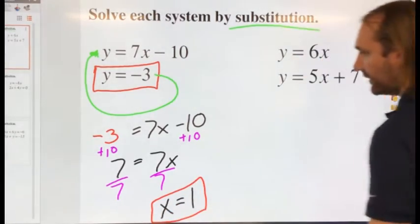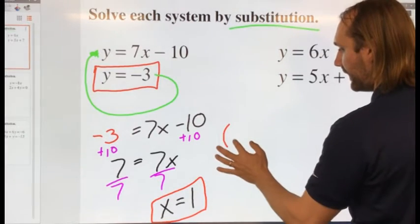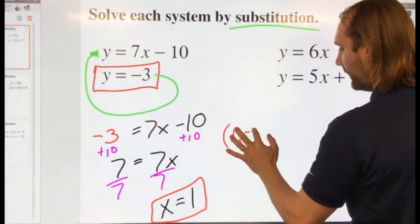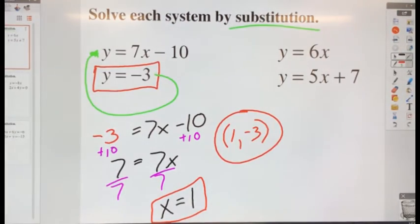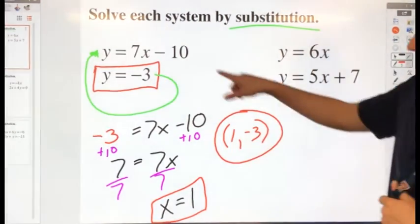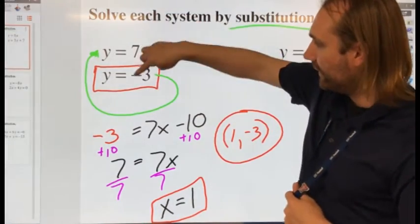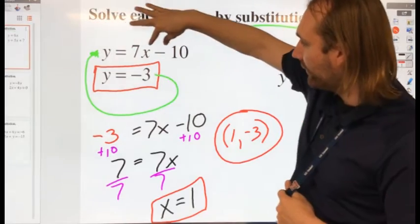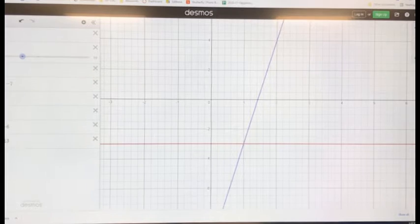So my solution is where x is 1 and y is negative 3. So we're going to write it like it would be coordinates, 1 and negative 3. Coordinates because, well, one of the ways you can solve this is algebraically like I just did here through substitution, but also graph these two lines. If I were to graph y equals 7x minus 10 and y equals negative 3 like I've done here, what are you looking for to determine the solution?